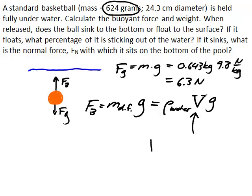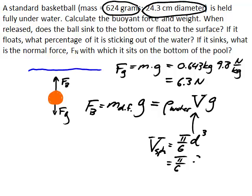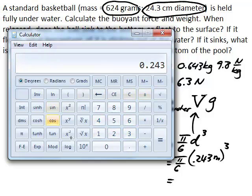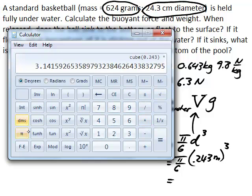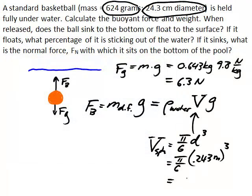And so for a sphere, the volume of a sphere is pi over 6 times the diameter of the sphere cubed. Or that's also 4/3 pi r cubed. But since we're given the diameter here, let's use the form of the equation that has diameter in it. So we have pi over 6 times 0.243 meters cubed. So that volume is 0.243 cubed times pi divided by 6 equals 0.0075 cubic meters.